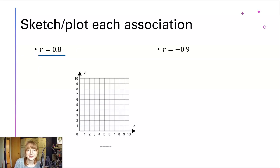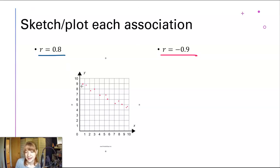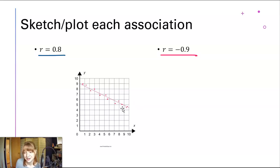Let's try R equals negative 0.9 using a different color. Now we're going to go in a negative direction, and this is going to be even closer to the line. If I draw the best fit line right in there, you can see those dots are very close to that line and it is going down to the right — so this is a negative association with a strong correlation.